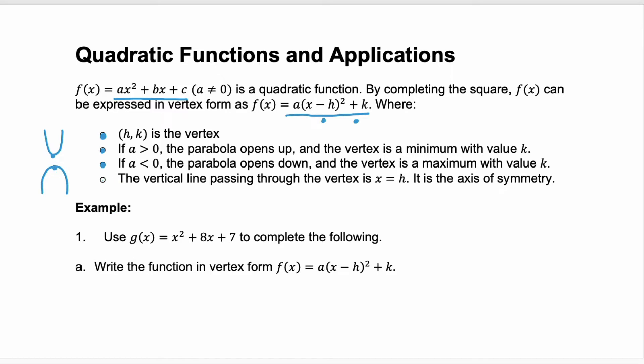Vertex form will also give us the vertical line that passes through the vertex, which is x equals h, and this is called the axis of symmetry. All of these key pieces of information help us to quickly and accurately graph this quadratic function.